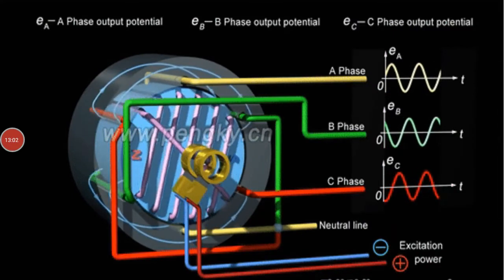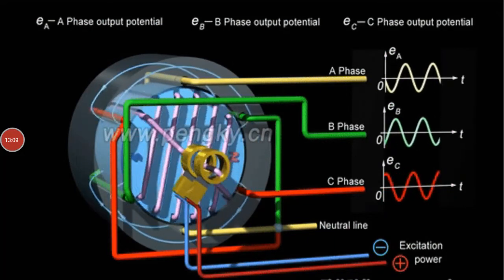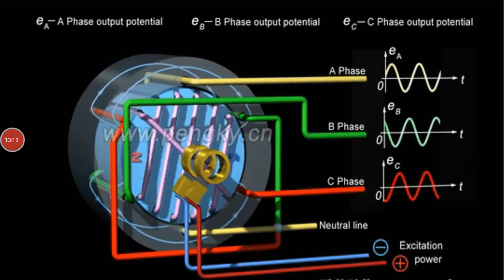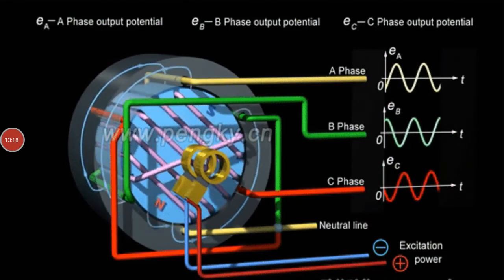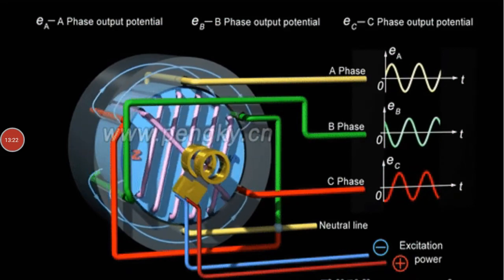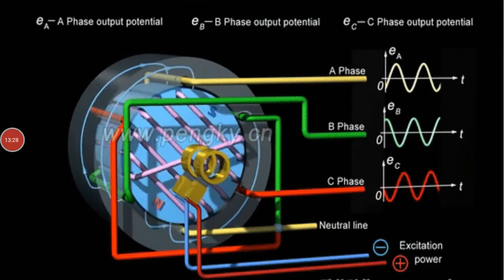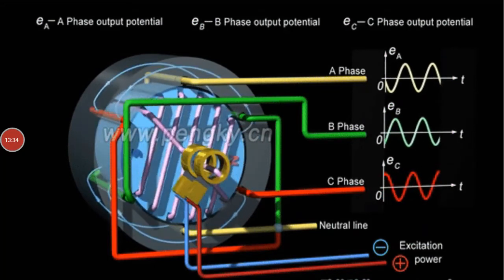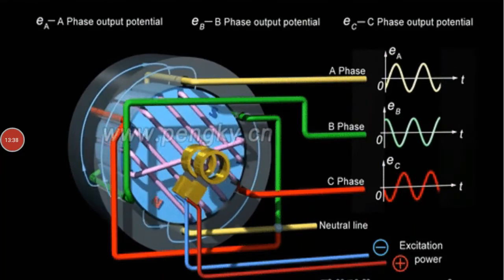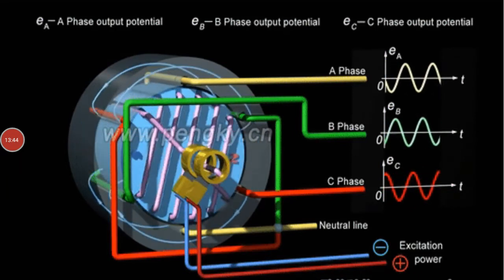An animation is shown with three coils in yellow, green, and red colors. These three coils share a common point shown in blue, which represents the neutral. The rotor rotates — meaning the magnetic field is rotating while the coils remain stationary. Due to the rotating magnetic field, the flux changes, and due to the changing flux, an EMF is generated in each coil. Each coil's EMF is also shown as a waveform. The total output is the vector sum of all three coils.